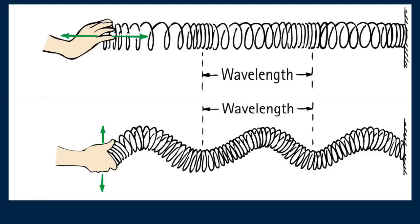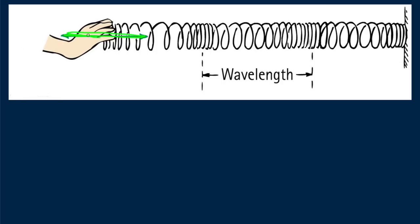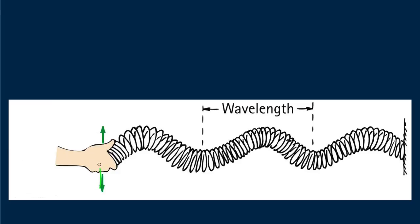Both types of waves are shown here. A slinky is a favorite way to distinguish between longitudinal and transverse waves. Shake it back and forth and you produce a longitudinal wave. Shake it up and down and you produce a transverse wave.